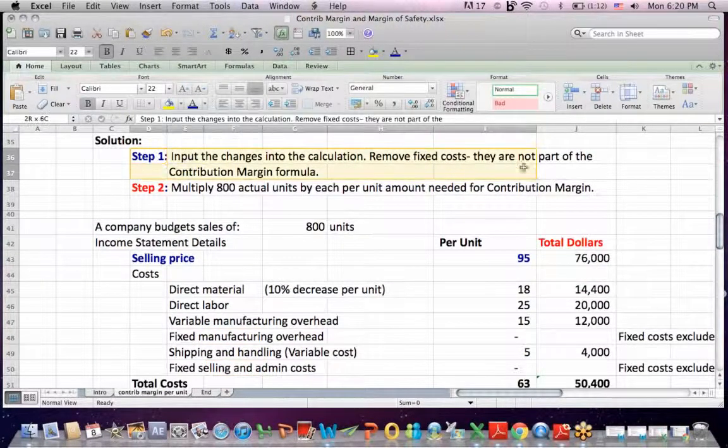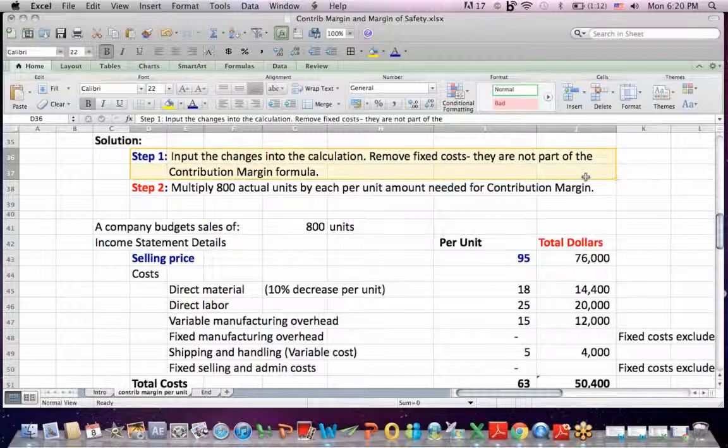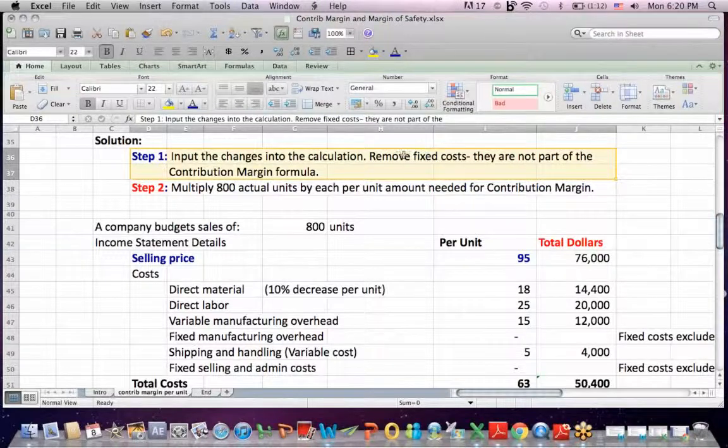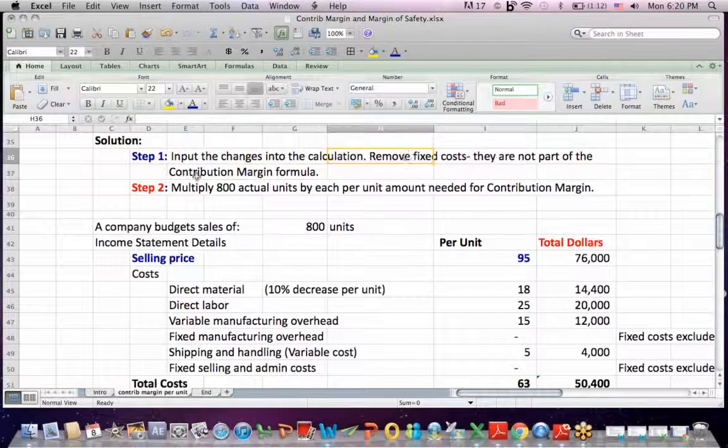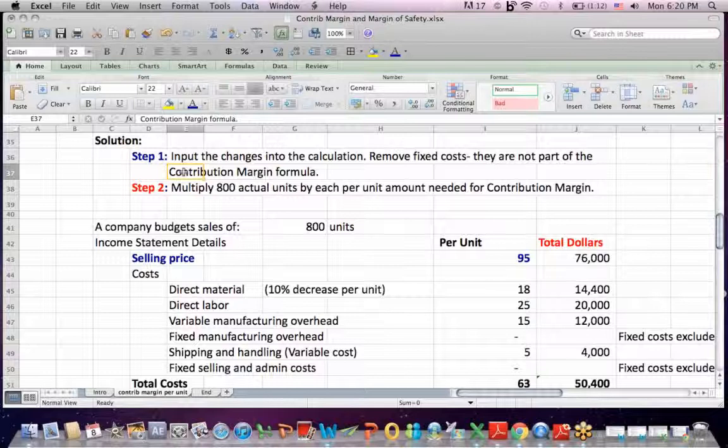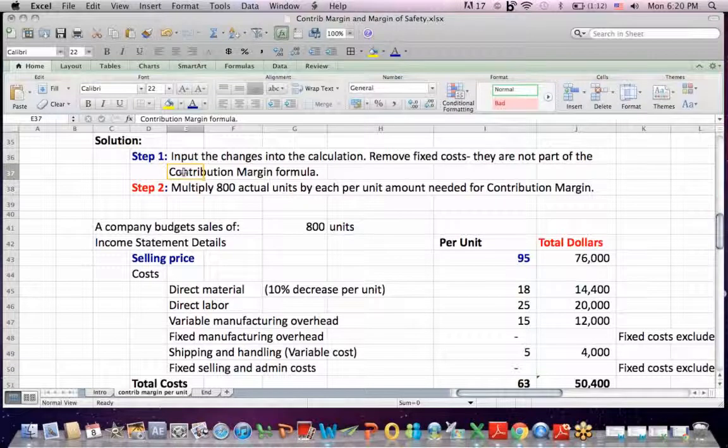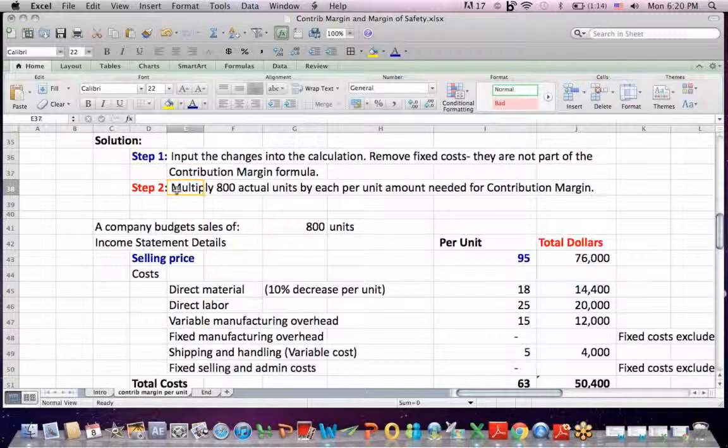So the first is, we input the changes into the calculation. And if we're just looking at contribution margin, we don't need to look at fixed costs. They're not part of the contribution margin formula. Again, we're only looking at contribution margin, which is defined as sales less variable costs.